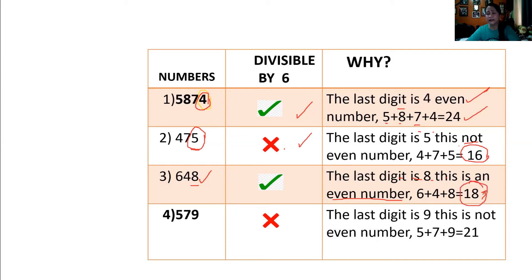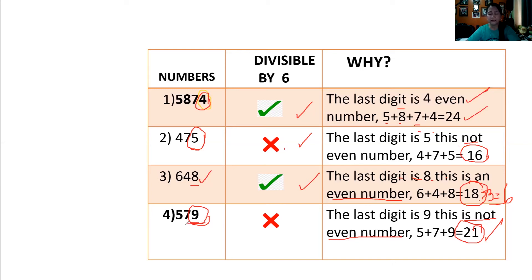18 is divisible by 3. This is divisible by 3, but the last digit is not an even number, so it's not considered divisible by 6. Okay.